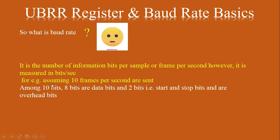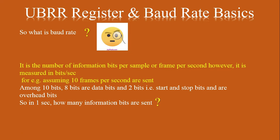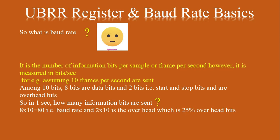A single frame consists of 10 bits. In one second, 10 frames are sent; therefore, 10 × 8 = 80 bits of information are sent per second. The number of redundant bits is 2 × 10 = 20 overhead bits per second, giving 20/80 × 100 = 25% overhead again.